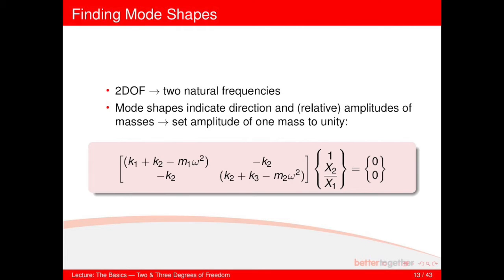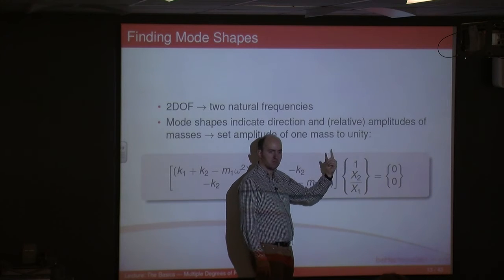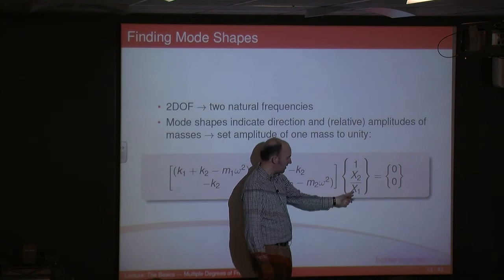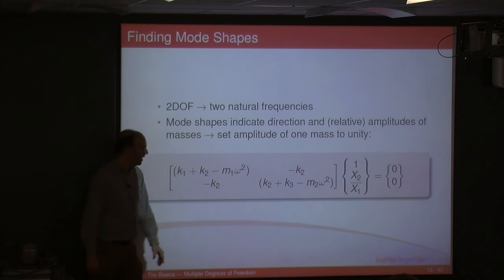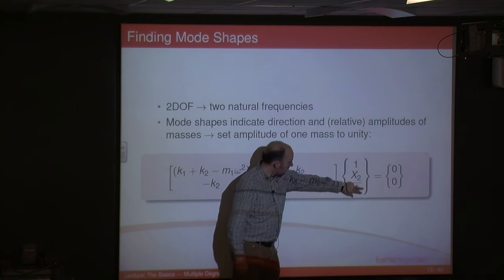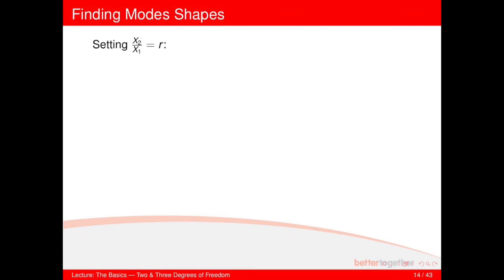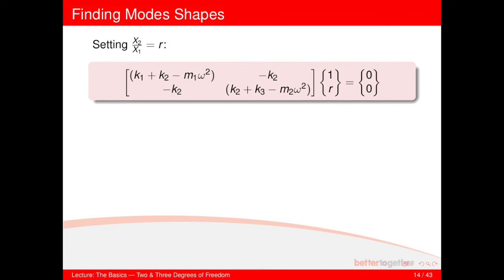And so what we do is we take our equation of motion that we had. Remember we had x1 and x2 over here, what I've done is I've divided both sides of the equation by x1. And so obviously that x1 divided by x1 is 1, and we end up with x2 divided by x1 on the bottom down here, and what we do is we set this term to be R. And what we're going to do is find R. So we set that to be R, we end up with this equation.